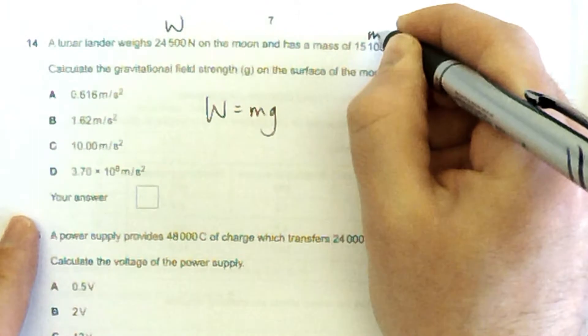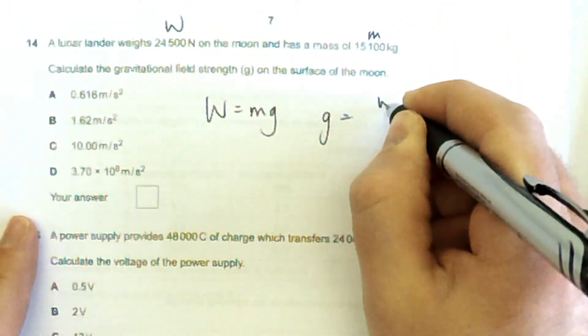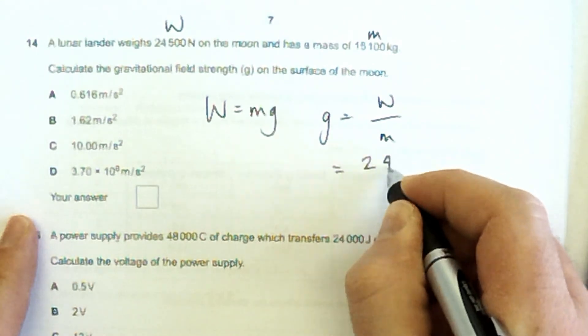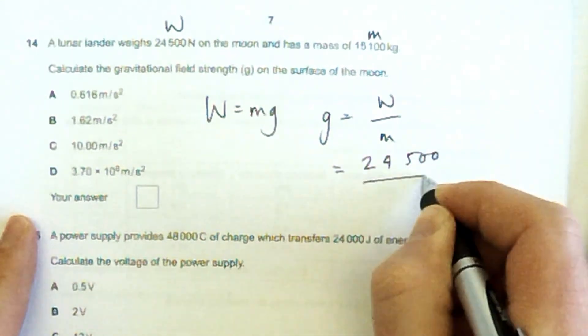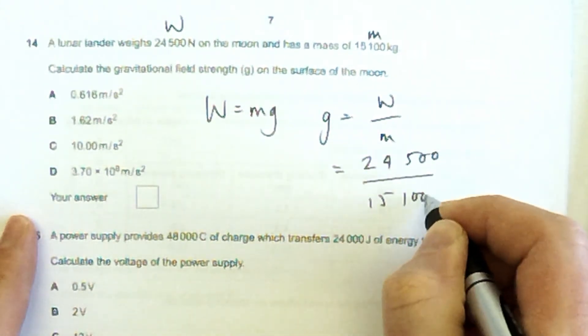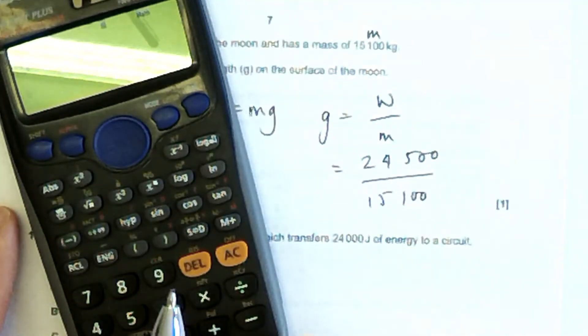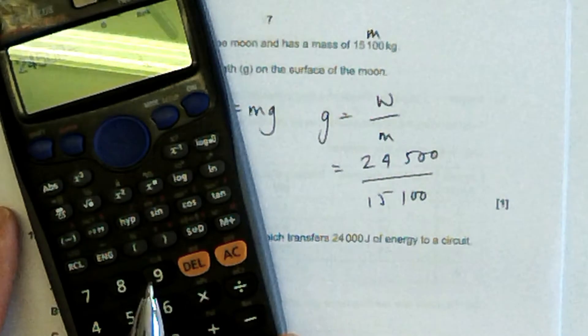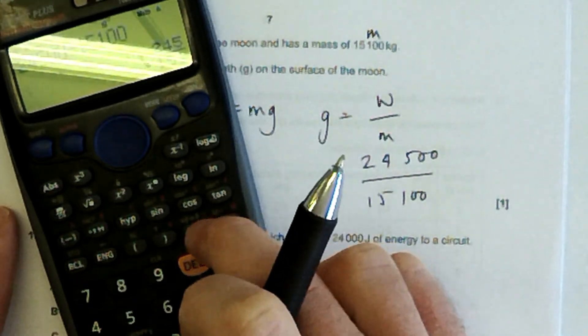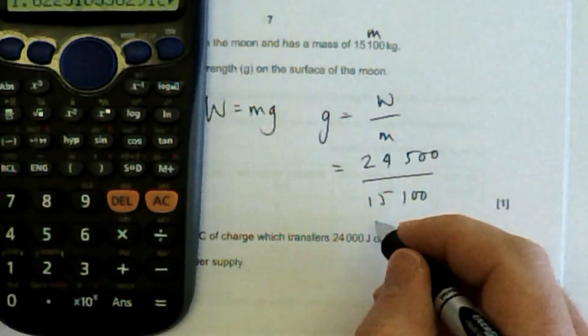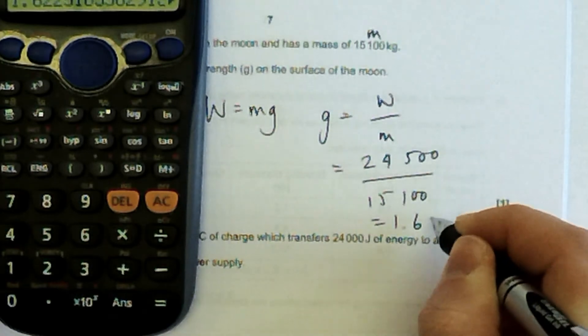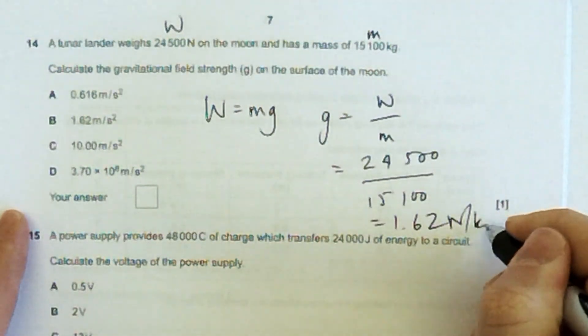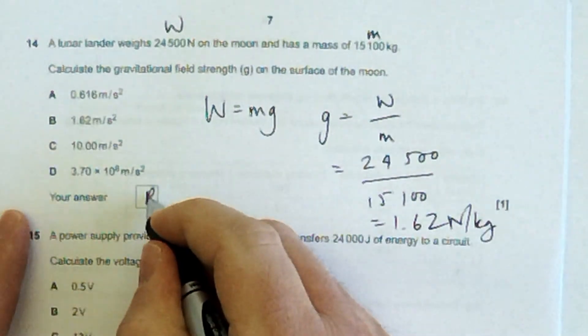That is m. So, g is w over m. 24,500 over 15,100. 1.62 newtons per kilogram. B.